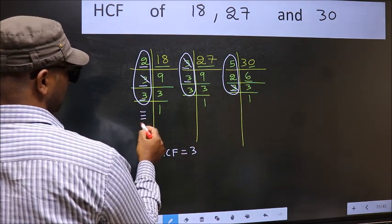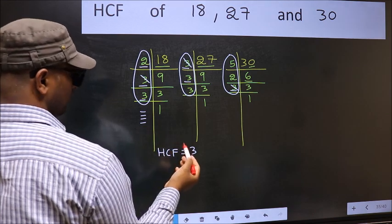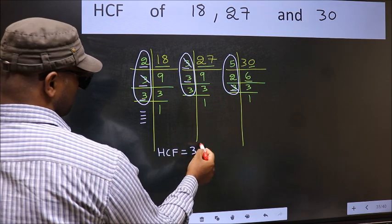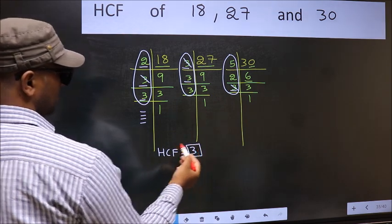No more numbers have been left out. So we have only one number, 3, present in all the 3 places. So 3 itself is our HCF.